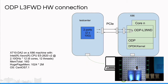Here's a simple diagram of the connections. We have test centers with two 10 Gbps connections with the x86 machines. The x86 machine was inserted with an x710DA2 NIC.